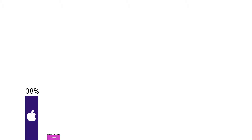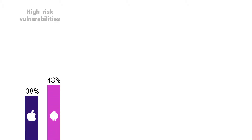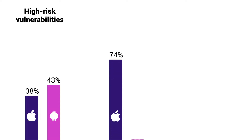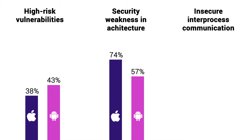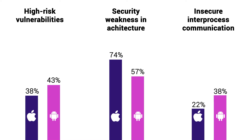Recent data suggests that 38% of mobile applications for iOS and 43% on Android carry high-risk vulnerabilities. A large number of them — 74% for iOS and 57% for Android — affect mobile apps due to weaknesses in their security architecture. Insecure inter-process communication is also a vulnerability found in 38% of Android apps and 22% of iOS apps.